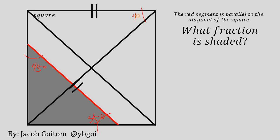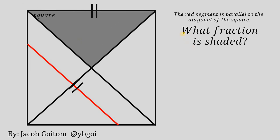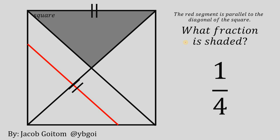Take note: this angle here is 45 degrees and the other angle is also 45 degrees. By the Angle-Side-Angle (ASA) postulate, we can say that these 2 right triangles are congruent. So, we can place the shaded region in that spot, and it follows that the shaded fraction must be 1/4 of the square. That is the answer.